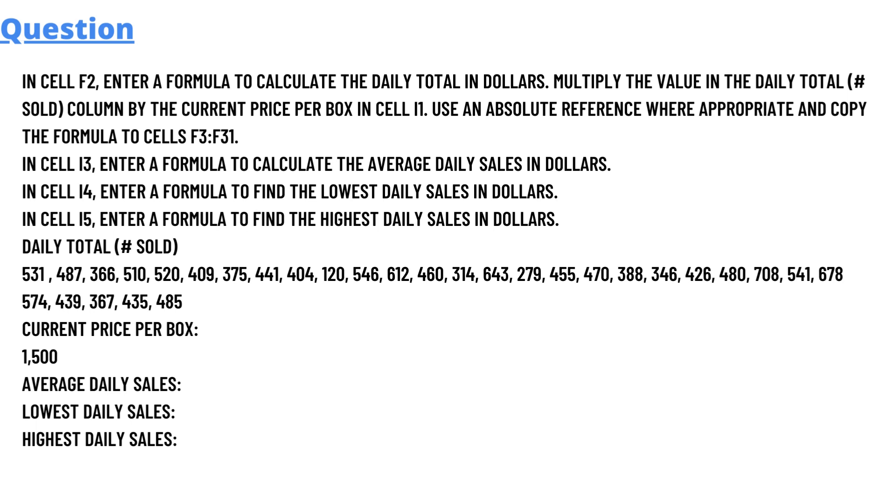So we have some daily total of sold data. The current price per box is 1500. What we need to do here is calculate the average daily sales, lowest, and highest.